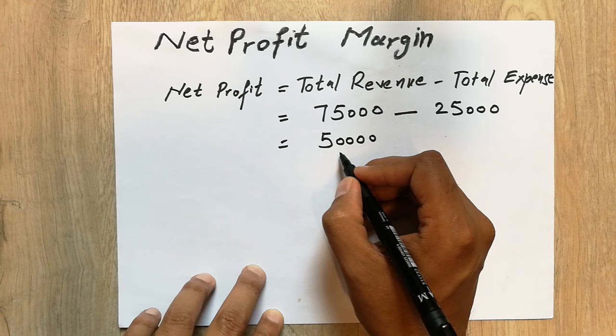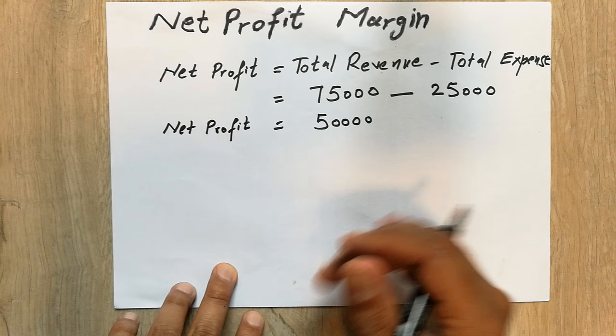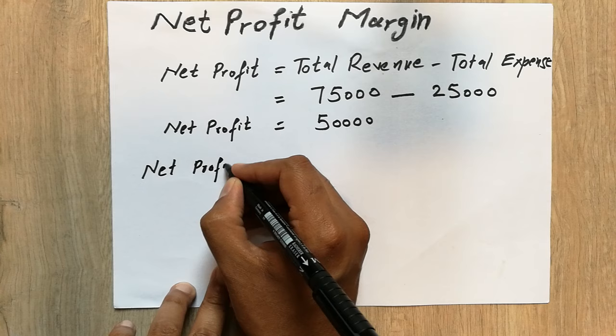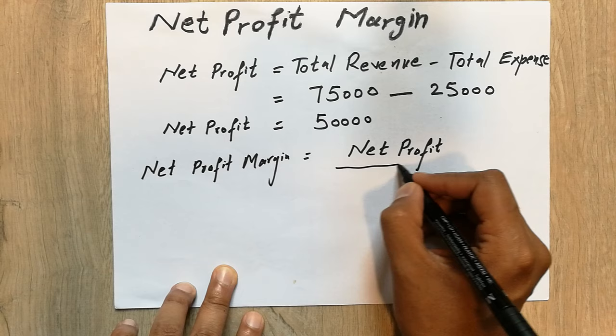The next step, which is very important, is the net profit margin. To calculate the net profit margin, the formula is: Net Profit Margin equals net profit divided by total revenue.